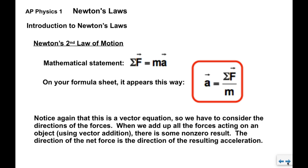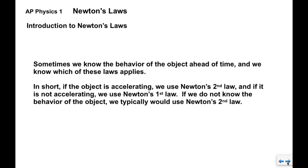Again, this is a vector equation, so when we add up all the force vectors, we come up with a non-zero result. The direction of the net force is the direction of the resulting acceleration. That makes sense—if you add up all the forces and have a net force to the right, that's the way the object will accelerate. Sometimes we know the behavior of the object ahead of time, which will then determine which of the laws applies. If the object is accelerating, we use Newton's second law. If it's not accelerating, we use Newton's first law. If we don't know the behavior, we would probably tend to use Newton's second law because it's more general.